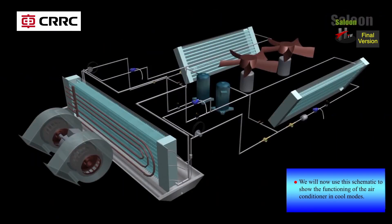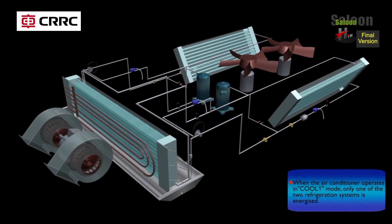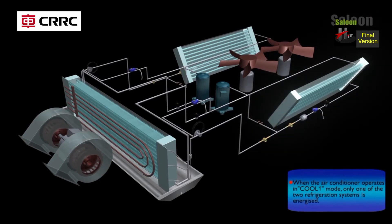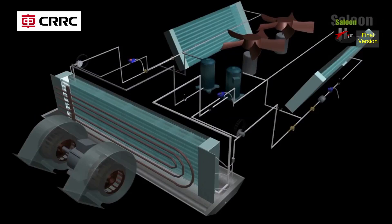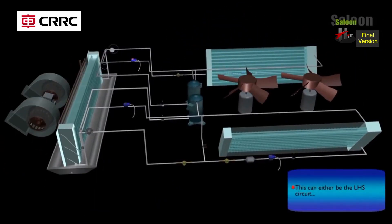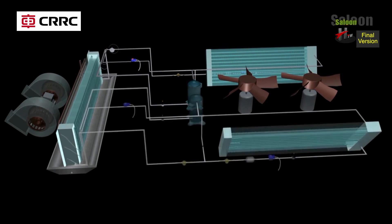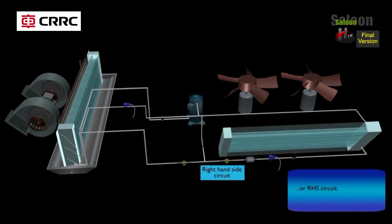We will now use the schematic to show the functioning of the air conditioner in cool modes. When the air conditioner is operating in cool mode, only one of the two refrigeration systems is energized. This can either be the LHS circuit or left hand side circuit, or the RHS circuit, the right hand side circuit.